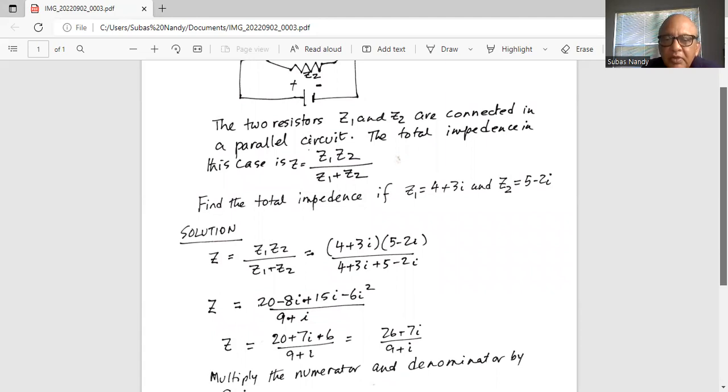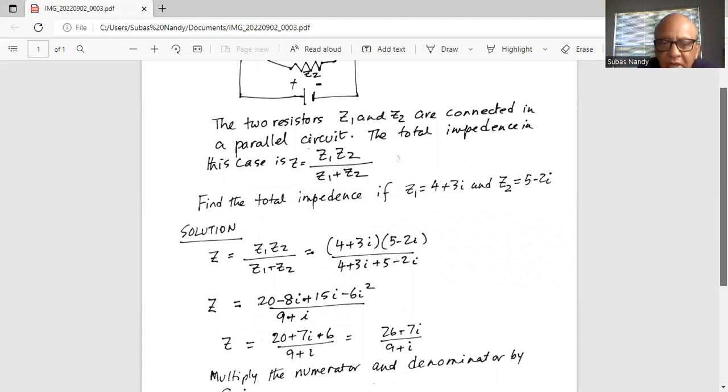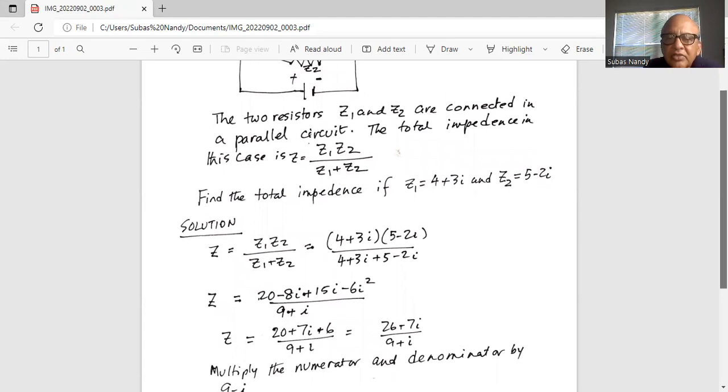...divided by, in the denominator, we have 4 plus 5 is 9 and 3i minus 2i is just i.